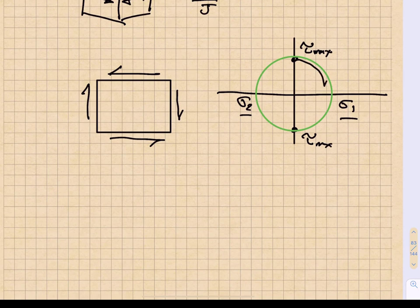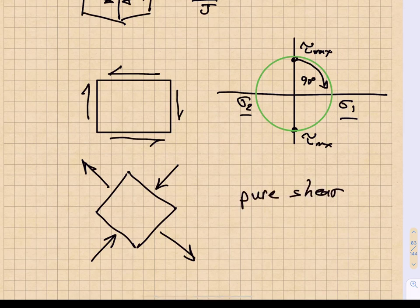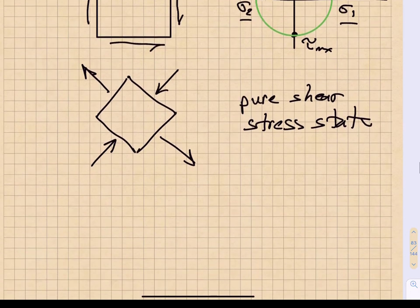So if we were to rotate 90 degrees clockwise in Mohr space, we would rotate 45 degrees clockwise in the material space. And that would give us a tensile stress in this direction and a compressive stress of equal and opposite magnitude in this direction. That is the pure shear stress state, which we get when we have circular shafts exposed to pure torsion.